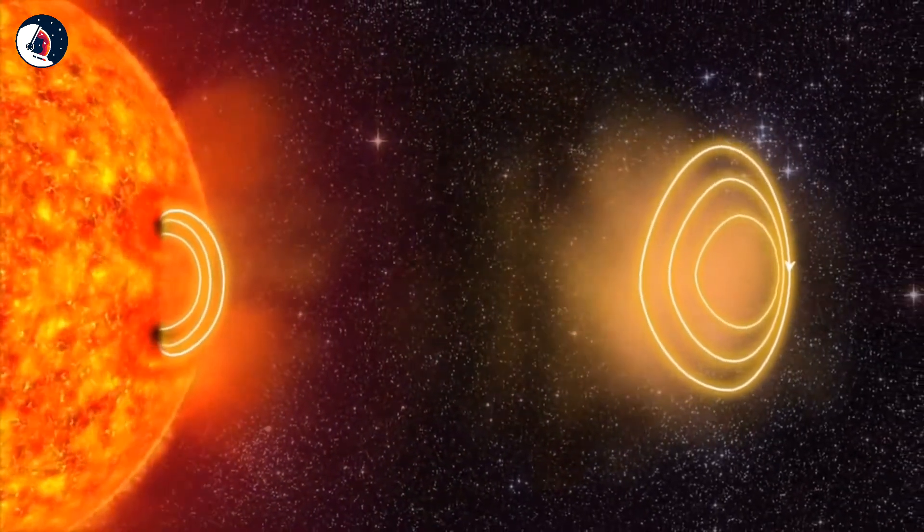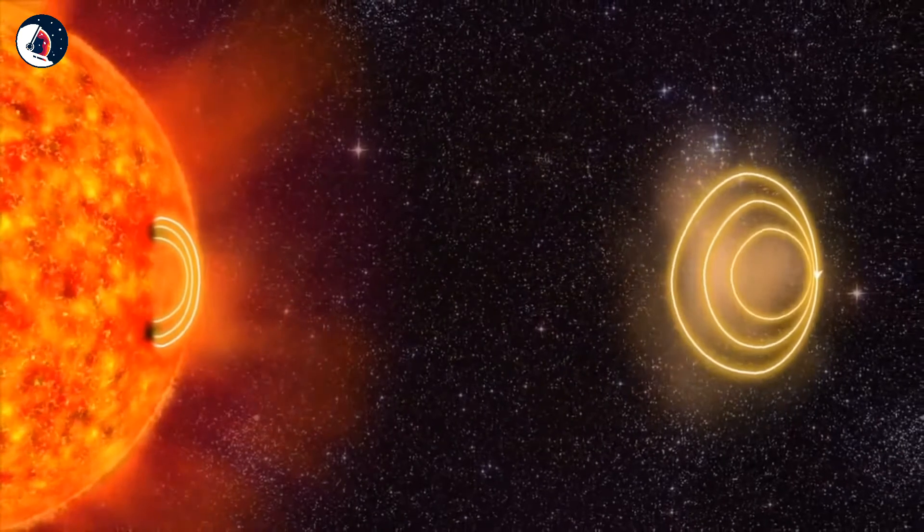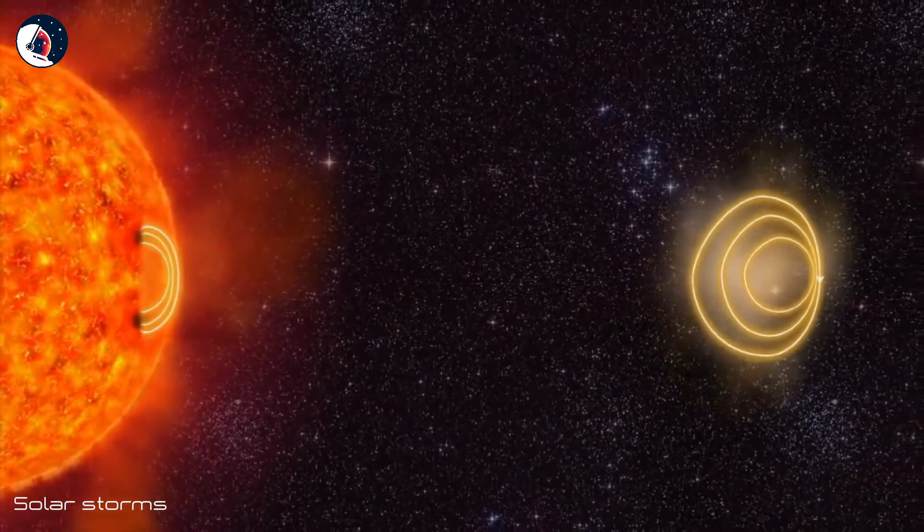Several billion tons of plasma is hurled out from the Sun. This is called a solar storm.